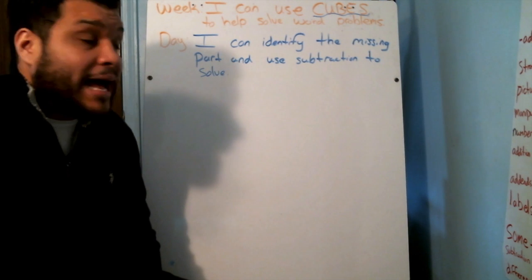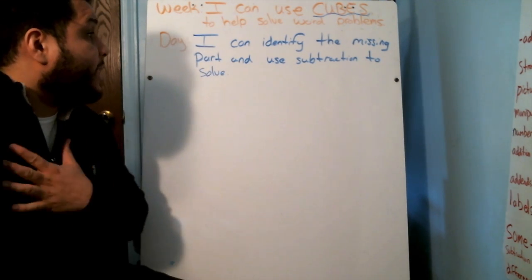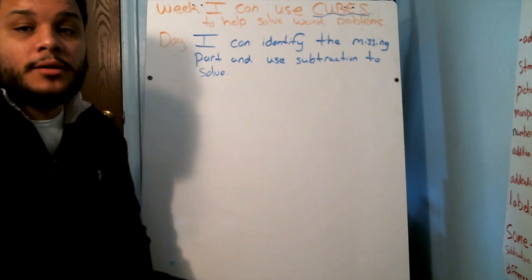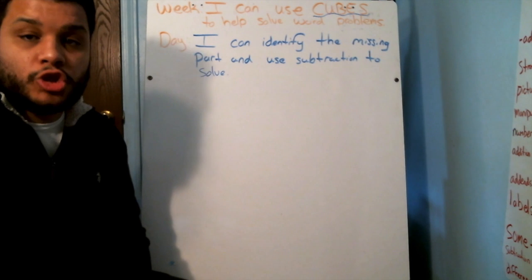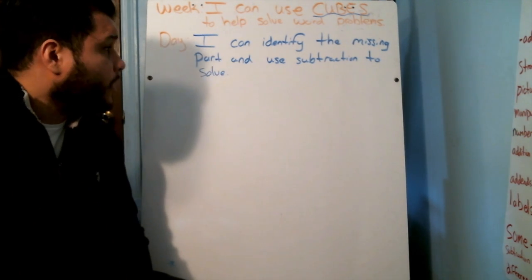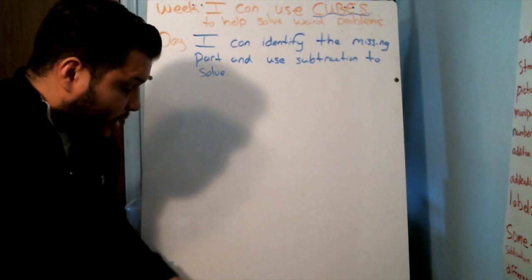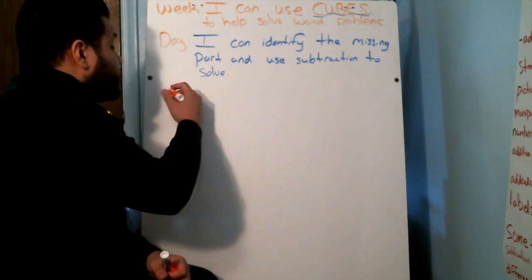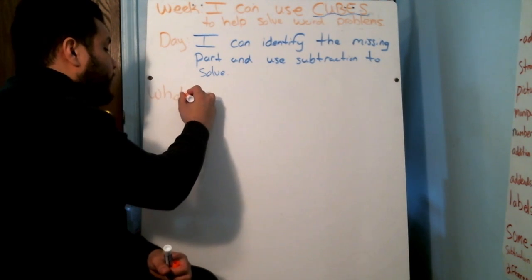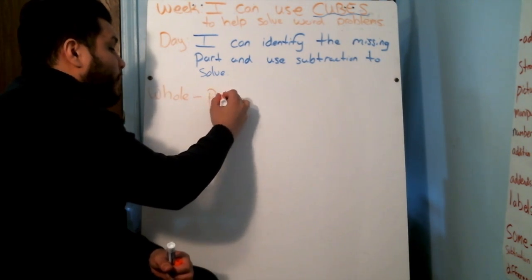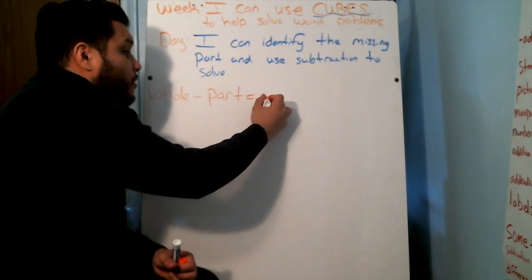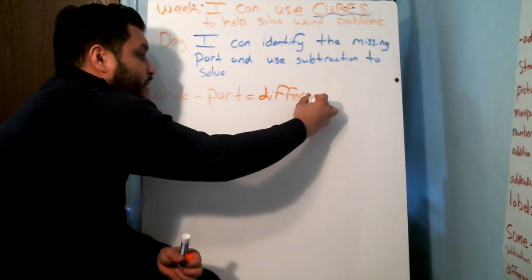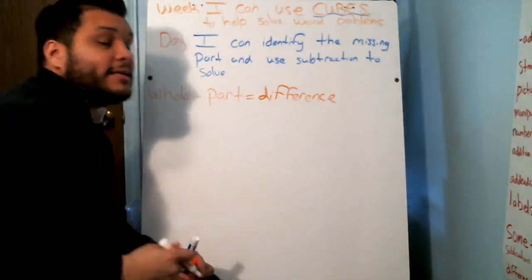Repeat our I can statement. I can identify the missing part and use subtraction to solve. We're going to focus in on this again. Let's remember that subtraction, our formula for subtraction, say it with me, it's whole minus part equals the difference.